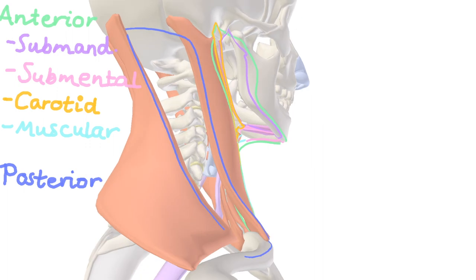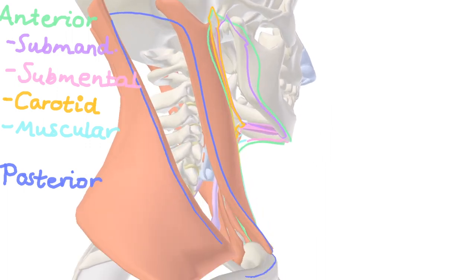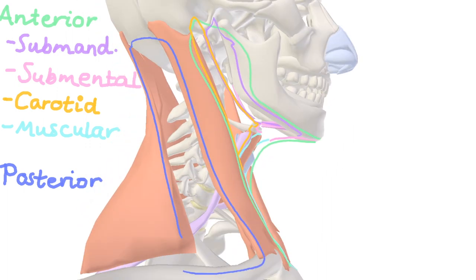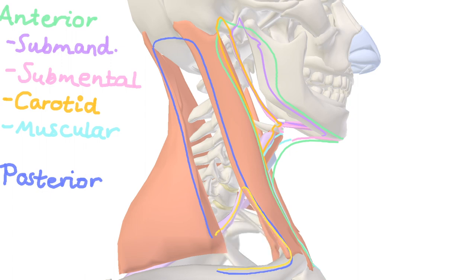The inferior portion of the posterior triangle is called the supraclavicular triangle, the borders of which are the omohyoid, the sternocleidomastoid, and the clavicle. Within there we find the supraclavicular lymph nodes.